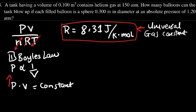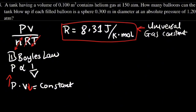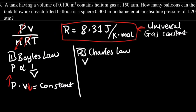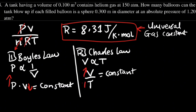So whenever the pressure increases, the volume will decrease. Now what if the temperature is changing and you have the pressure as constant? We will have the second law, which is Charles's Law, whereby the volume is directly proportional to the temperature — so V divided by T is equal to constant. Whenever the volume increases, the temperature will increase also.